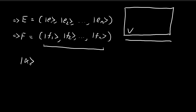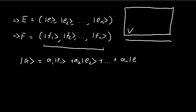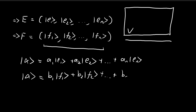Let's say we have a vector called alpha. Because E is a basis for the vector space V, I can express alpha as a linear combination of the vectors within E. And since F also forms a basis for the vector space V, we can express the same vector alpha in a different way — this time as a linear combination of the vectors within F. Both expressions result in the same vector alpha, but the right-hand side is different: one uses basis E with its corresponding scalars, the other uses basis F with a different set of scalars.